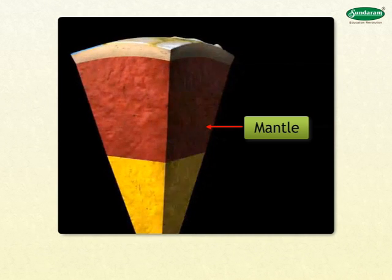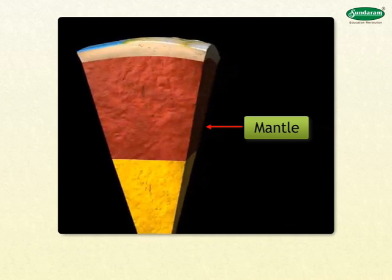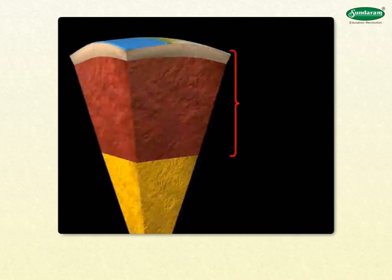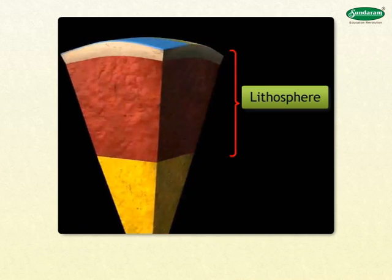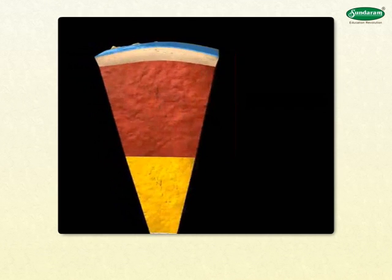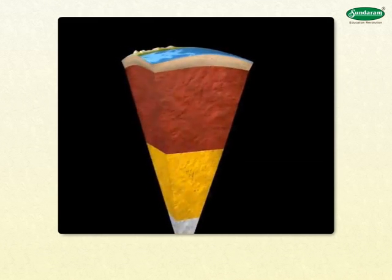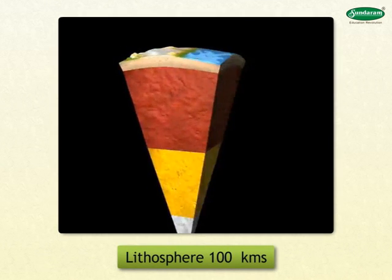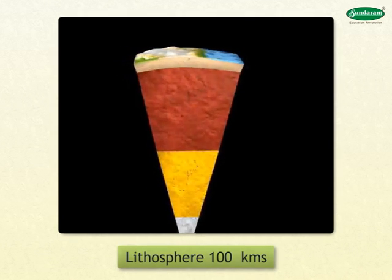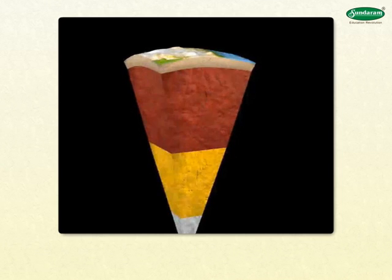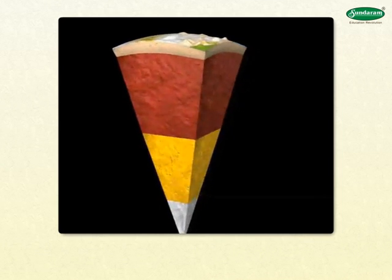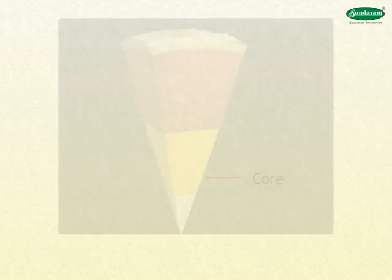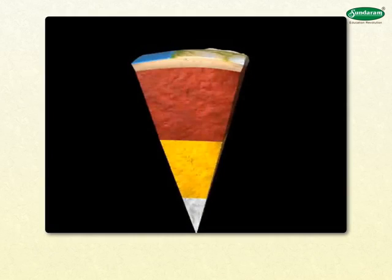The crust and a portion of the mantle adjacent to it are together called the lithosphere. The lithosphere is about 100 kilometers thick. The division below the mantle is called the core.